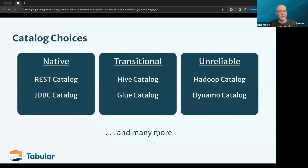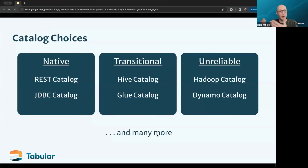There are a number of vendor implementations out there. Tabular provides a vendor-specific version of the REST catalog implementation, but there are many others — some more proprietary, some living in open source, some outside the Iceberg project but implementing the same interfaces. So there's a huge range to select from. The question is: why do they all exist, and why would you choose one over the other?